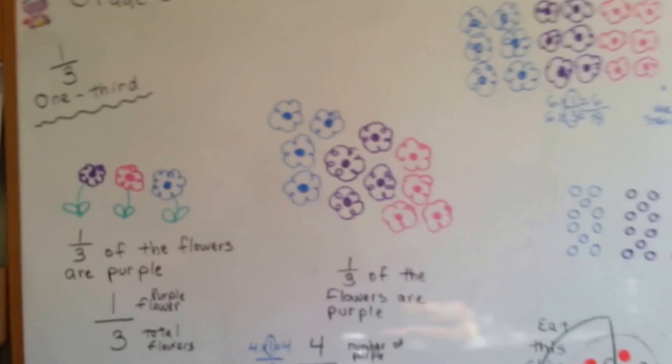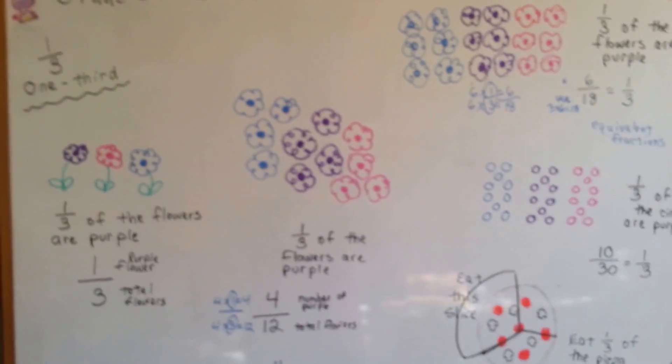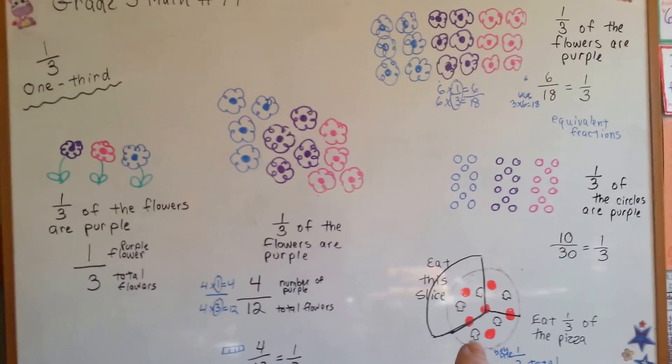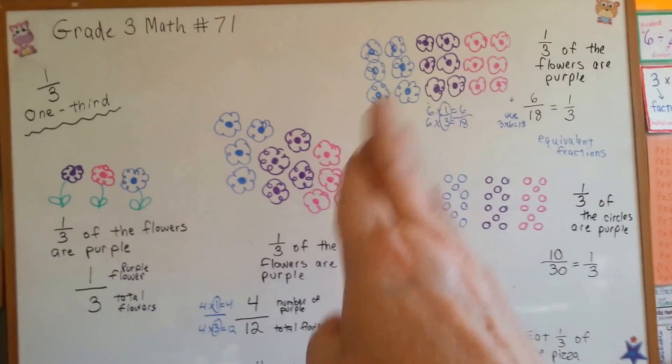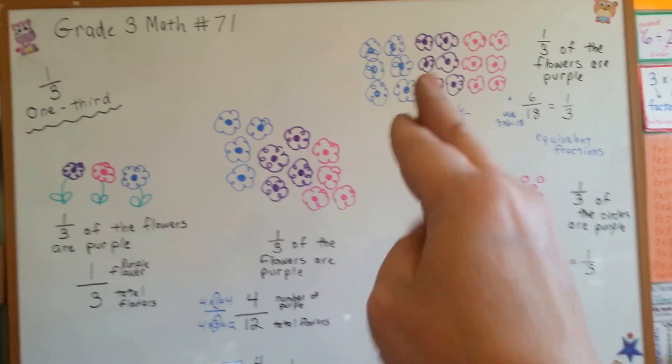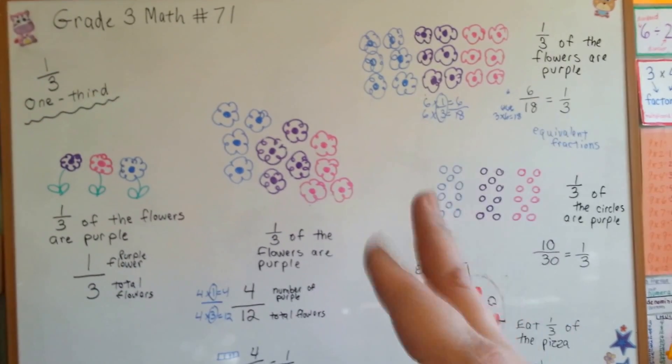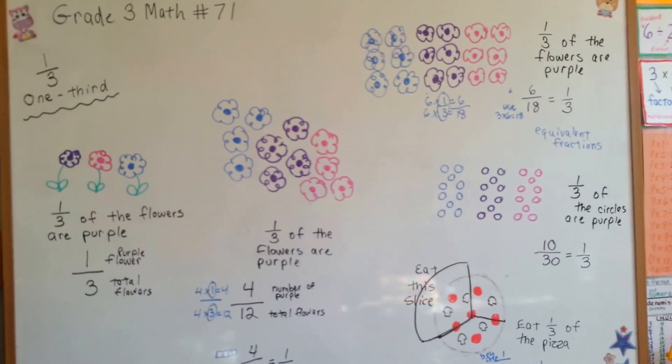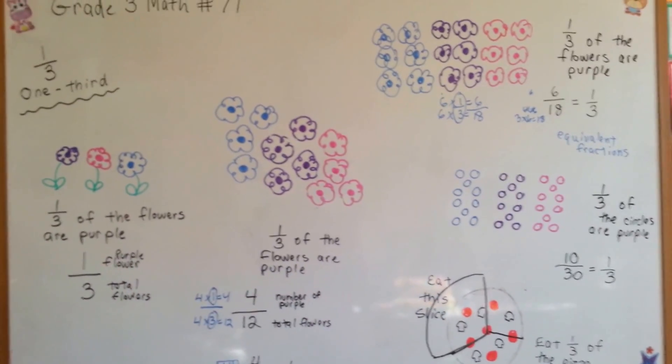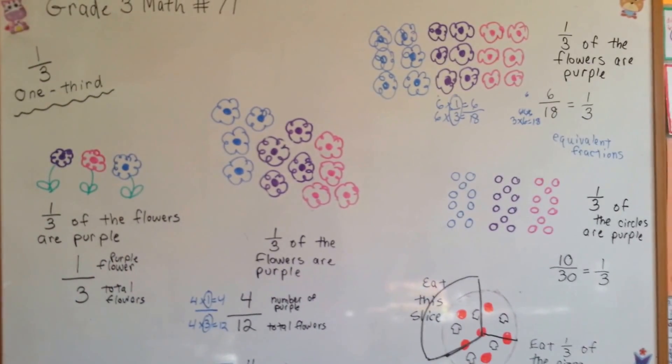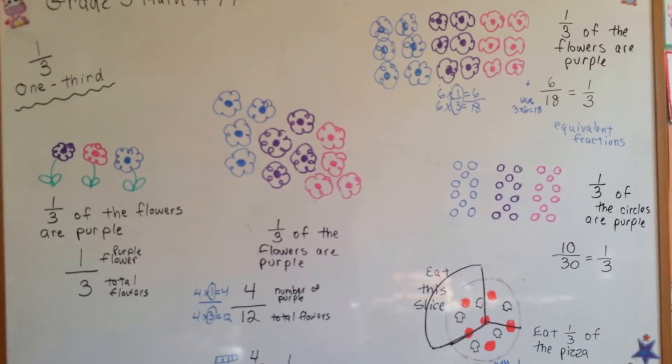This is what one-third means. You can have one thing split up into three, and you could take one of them so that you've got a third of it. Or you could have a lot of things split into groups and take one of the three groups and have a third. It's one-third. I'm going to talk about one-fourth next. Stick around. See you next video.